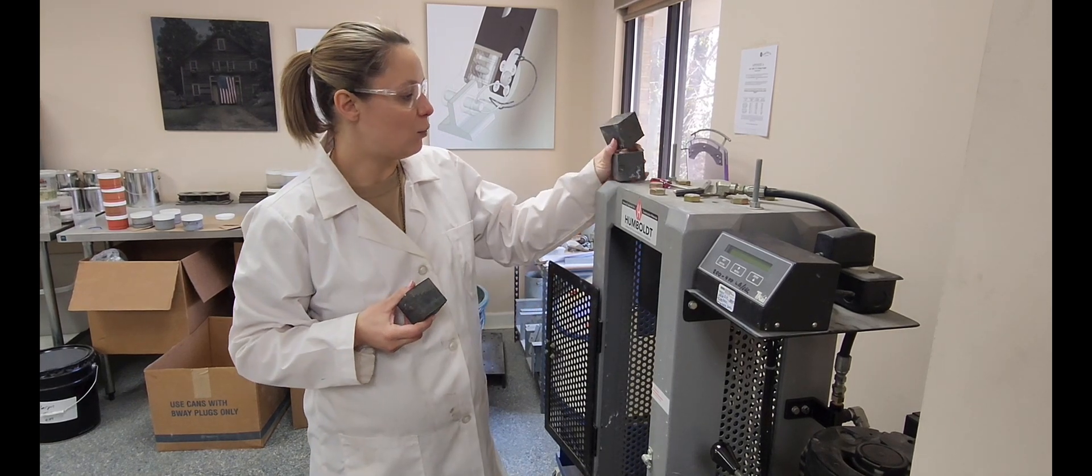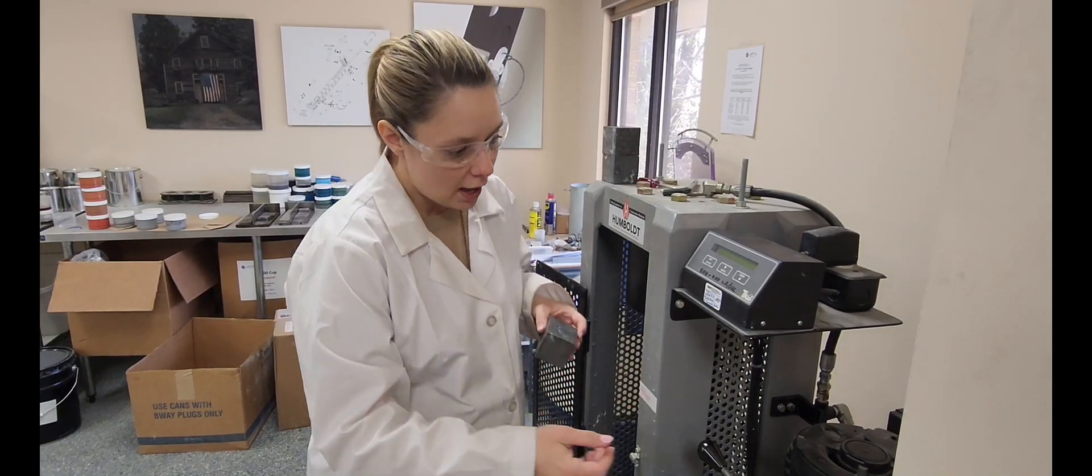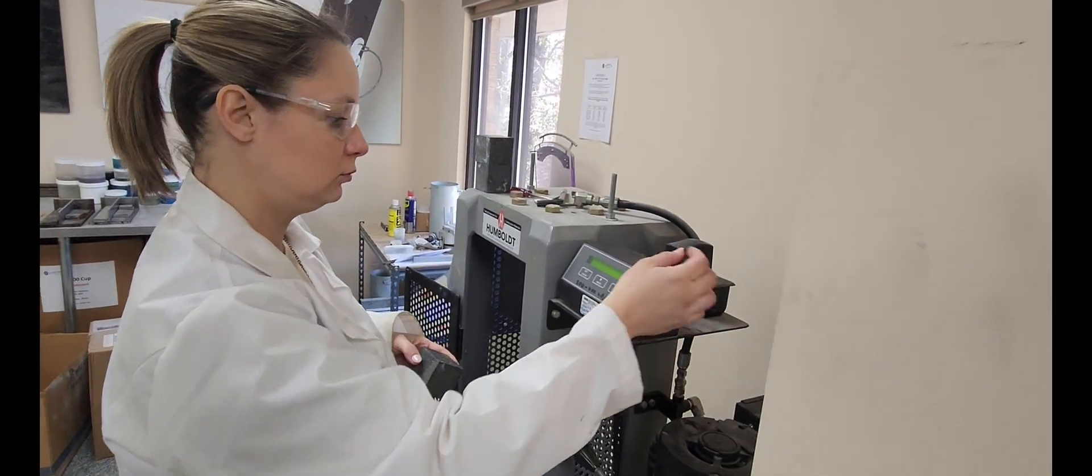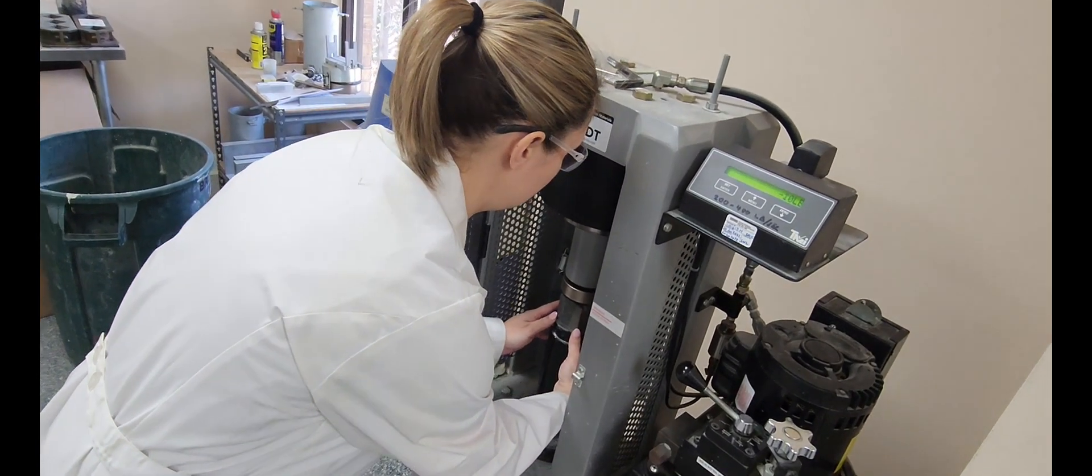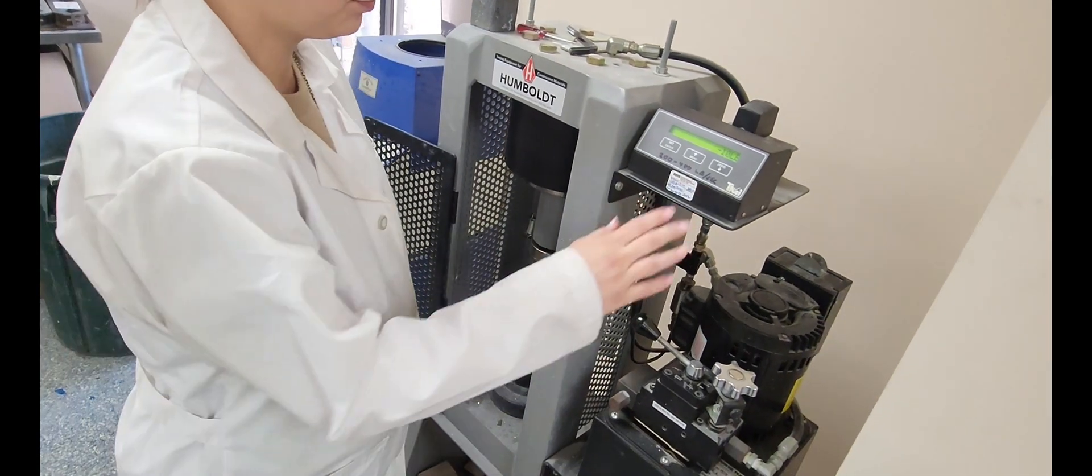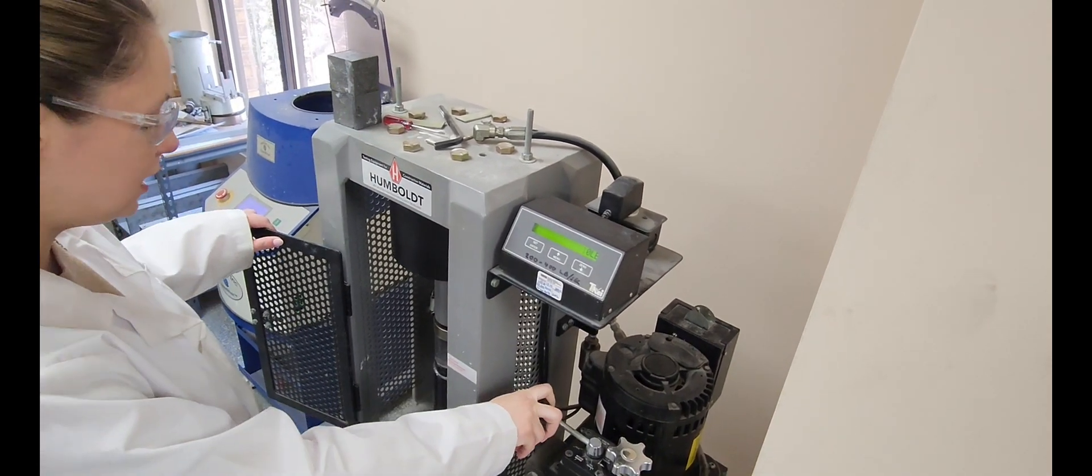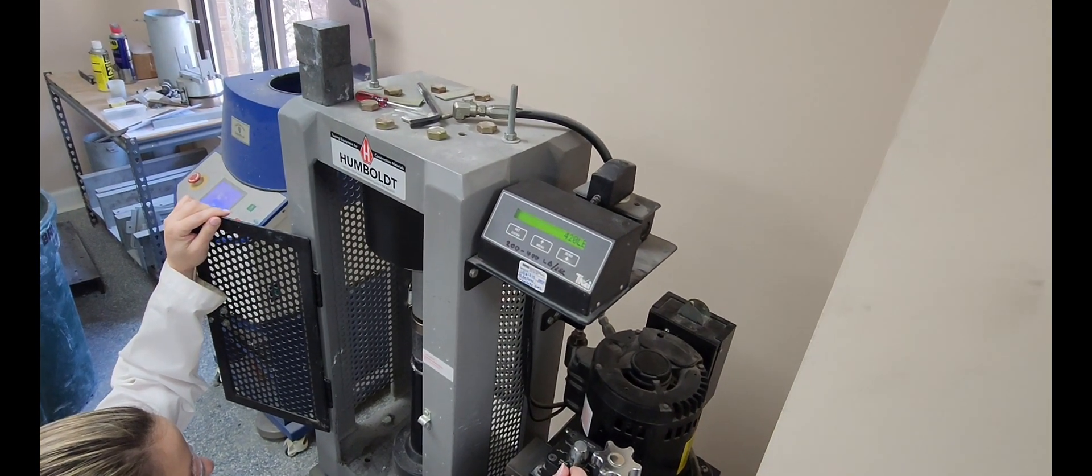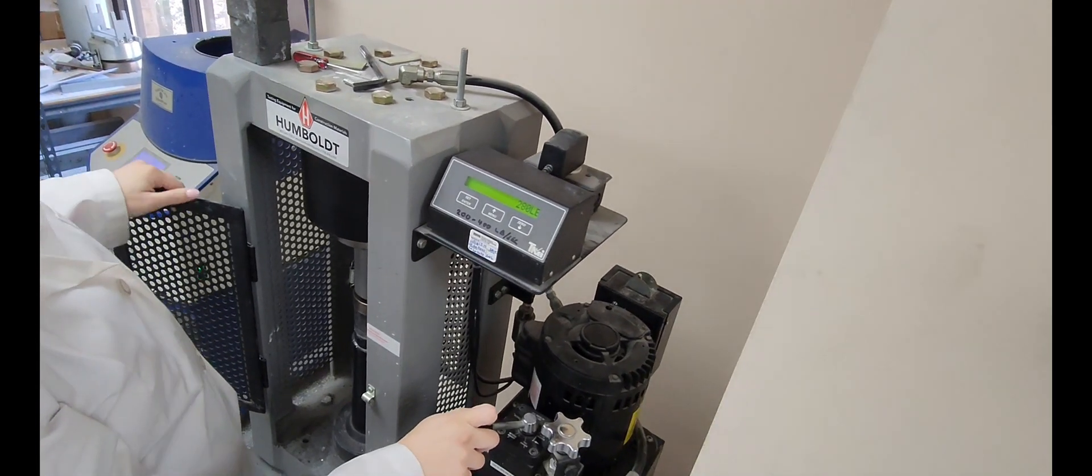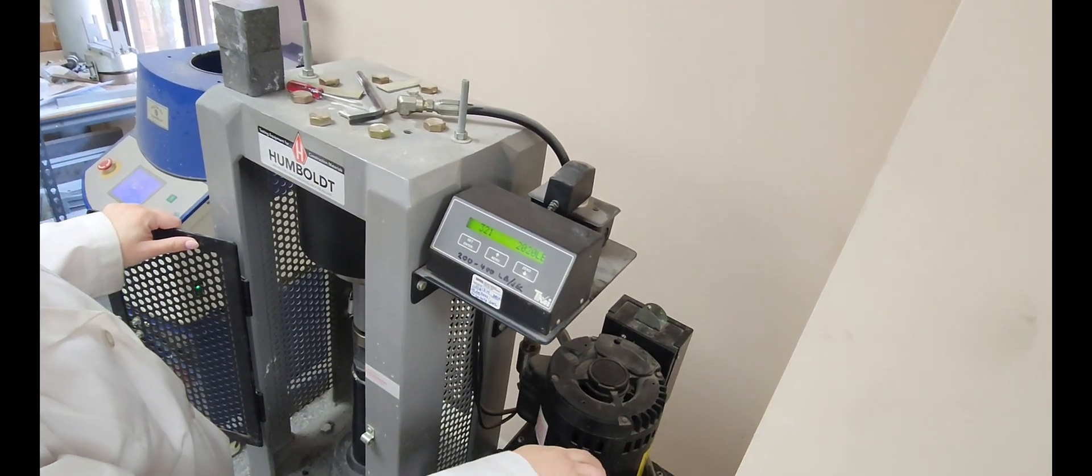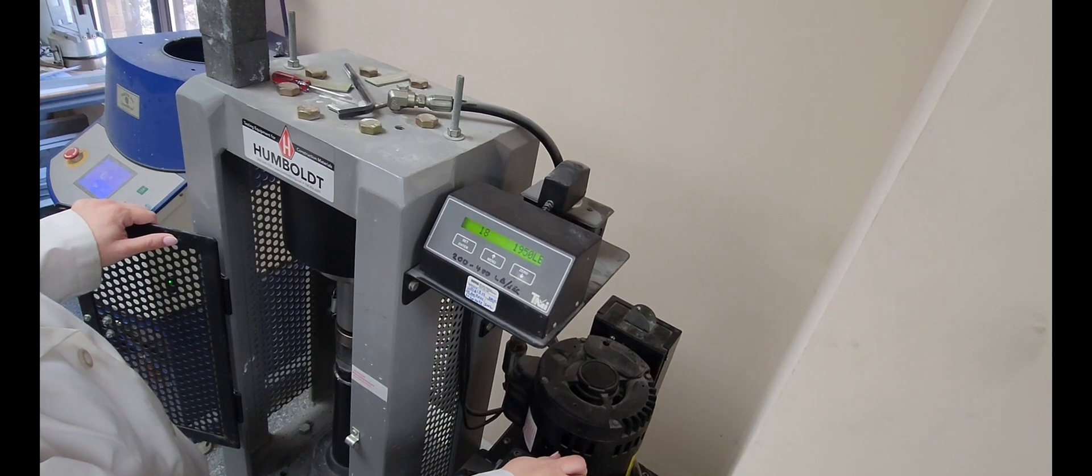We have our three cubes that have been curing in lime water for 28 days. These are ready to break now. This is our cube crushing machine here. We're just going to turn this on and we're going to put our cube in here. Make sure that's in the center of this mold. We're going to start advancing it until it hits the cube. Now you can see we've got an output here. We want this number to stay between 200 and 400 pounds per second. That's the load rate that the ASTM standard calls for.